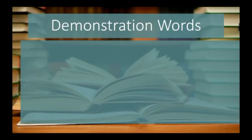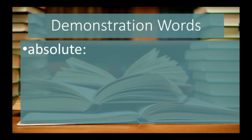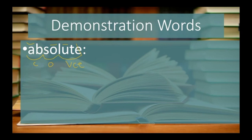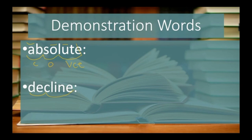We're going to go over a few demonstration words as a review. The first one is the word absolute. I'm going to mark it ab-so-lute. In this word, I have a closed first syllable followed by an open second syllable, so, and then lute — a VCE syllable where I cross the E and have a long U. My next word is the word decline. I'm going to keep D separate from cline, because this is going to be an open syllable. Cline has the VCE pattern with I-N-E, so I will mark the I as being long and cross off my E.